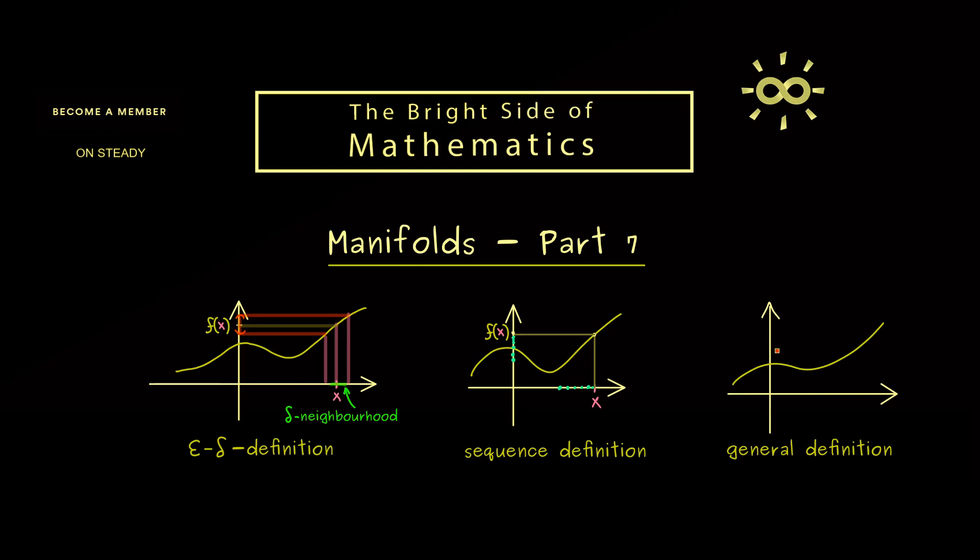More precisely, what we want is that for any open set we can choose on the y-axis, we find that the corresponding pre-image is also open. And please note, to denote the pre-image I use brackets.